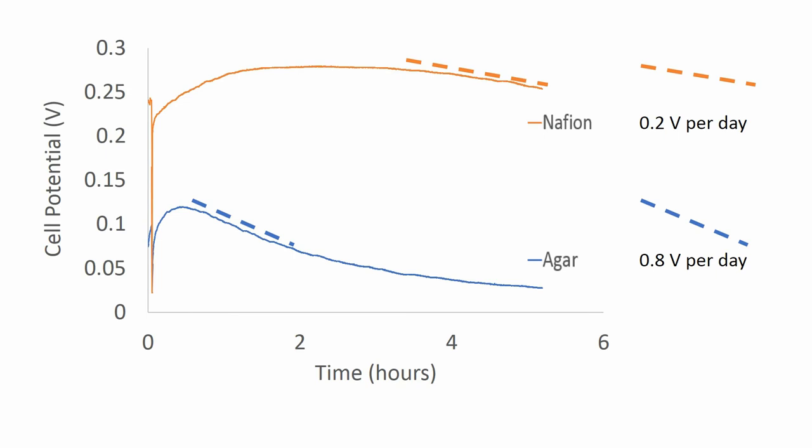With the Nafion membrane between there, you see that the cell comes to steady state chemistry, arranges itself around that membrane, and then slowly falls at about 0.2 volts per day versus an open cell potential of 0.25 volts. So we expect to see it fully discharged over the course of 24 hours or thereabouts.